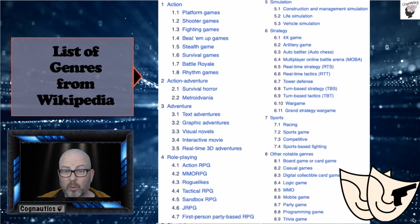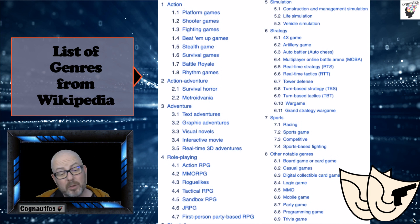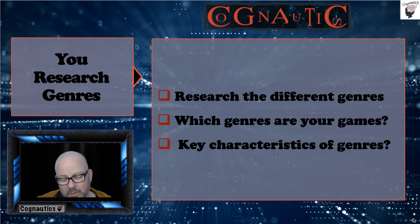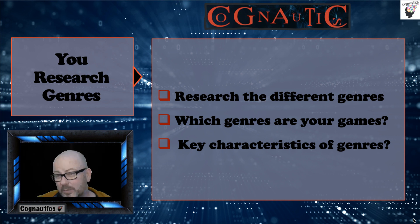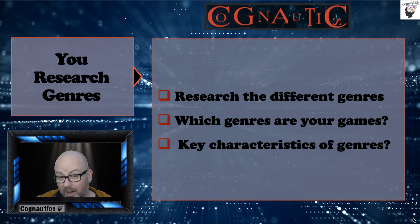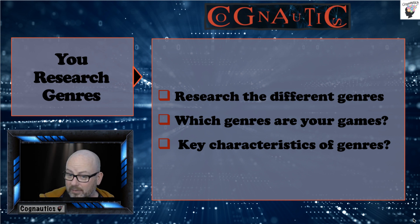This is the list of genre from Wikipedia: action, action-adventure, adventure, first person shooter, strategy games like Civilization, sports games, and others like board games — though we're not focusing on board games today. When you talk about genre, you'll need to research the different genres for your three games, state what genre each belongs to, and describe the key characteristics of that genre. If you use a web page to help you, put that in your bibliography and cite your sources properly.